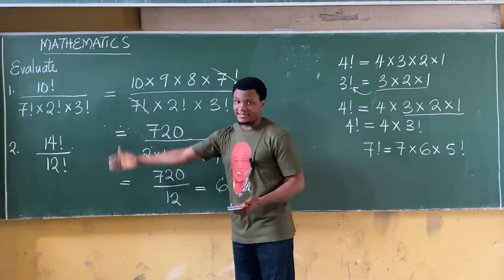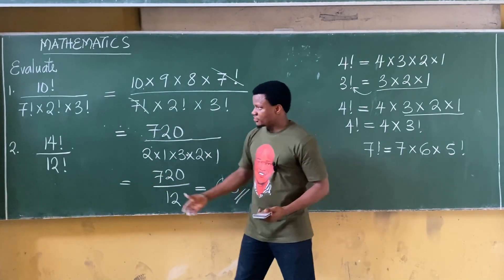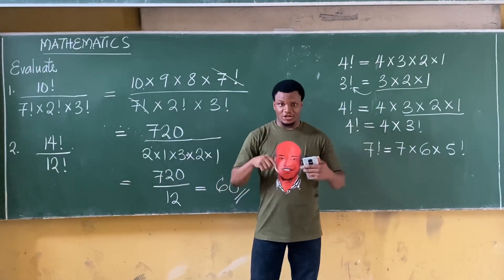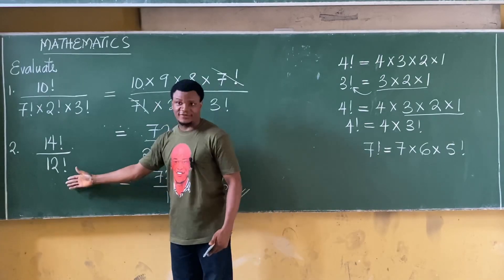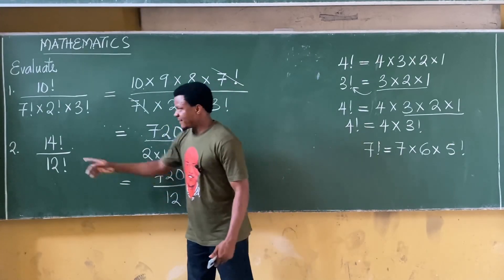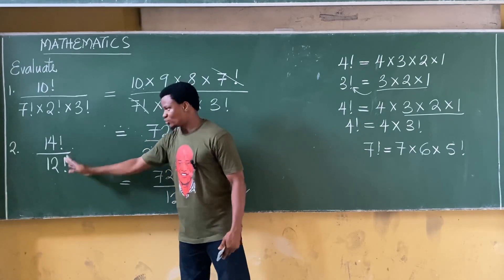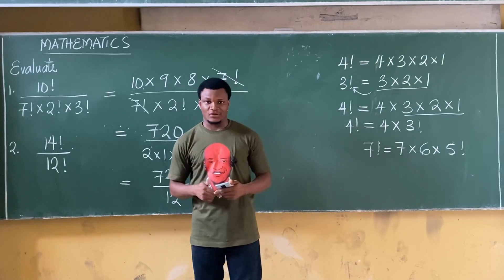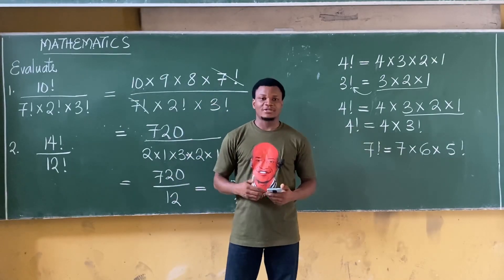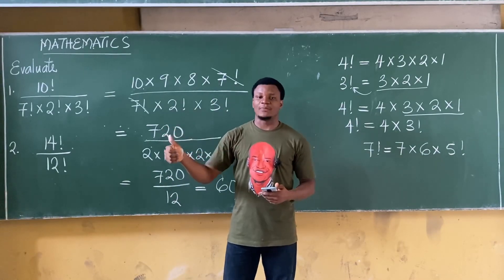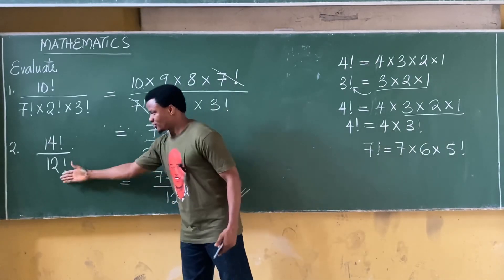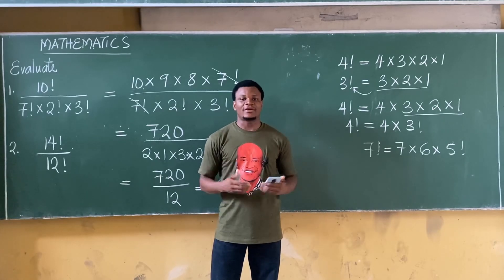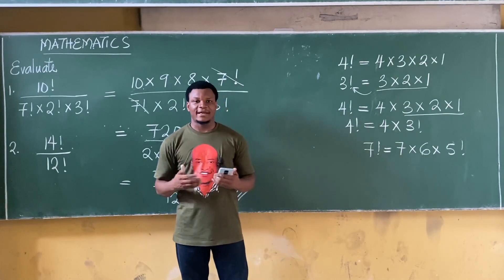So the answer to this question is 60. For question 2, try to solve: 14 factorial over 12 factorial. Your task is simple — express 14 factorial in terms of 12 factorial, cancel out the 12 factorial, and provide your answer in the comment section. If you enjoyed this video, leave a thumbs up, and I'll see you in the next class. Thank you.